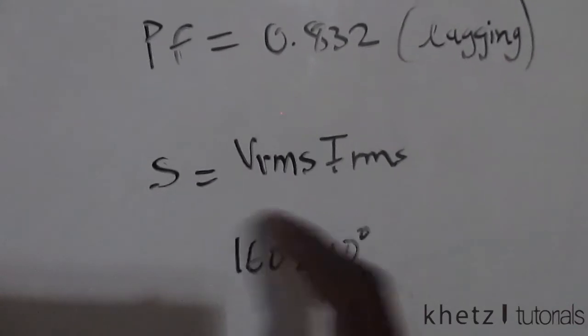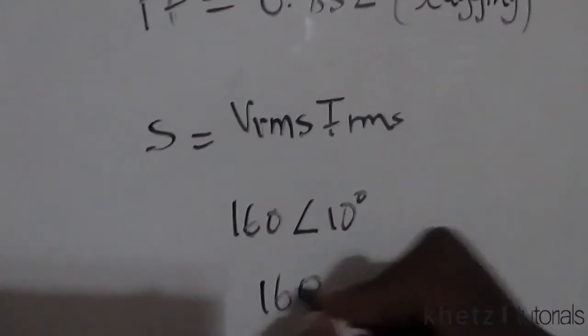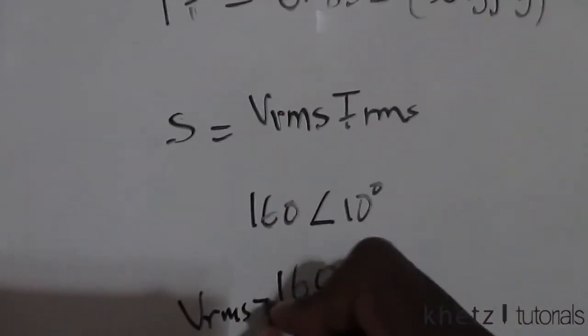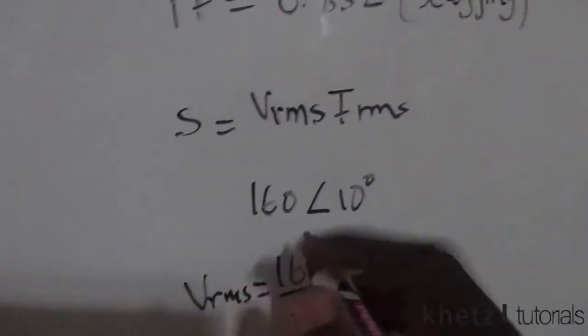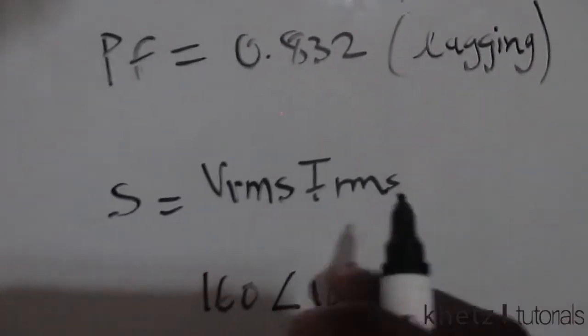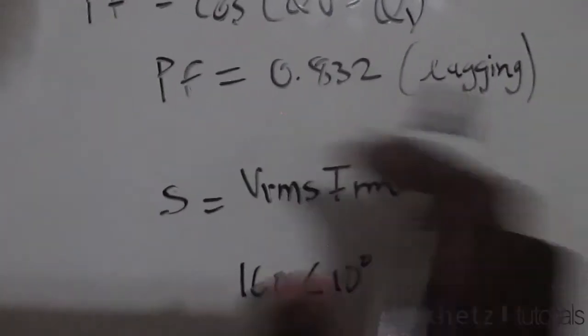To get an RMS value you actually take this magnitude, so this is the magnitude, and divide it by square root of 2. So that is VRMS. We also need IRMS to finally compute the apparent power.